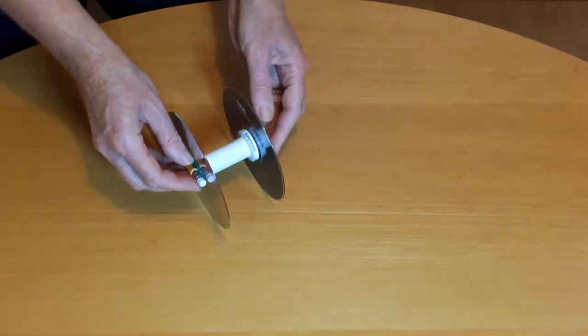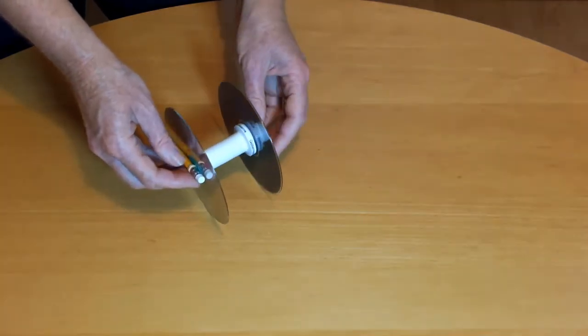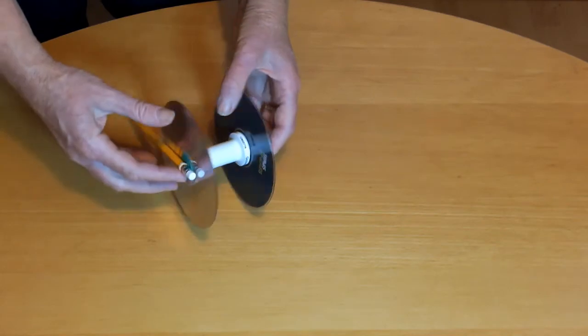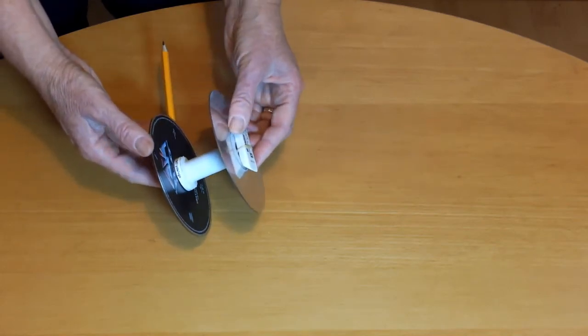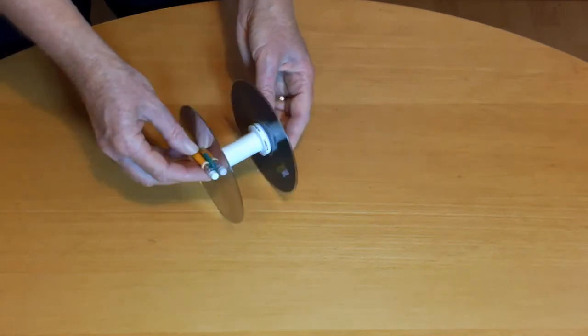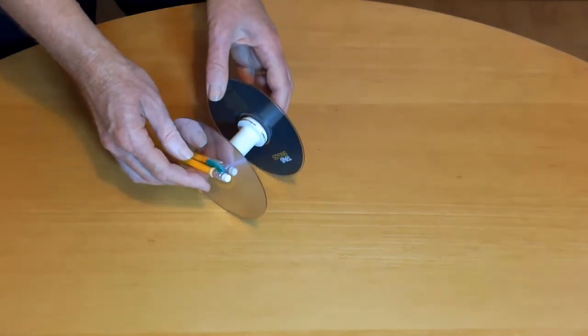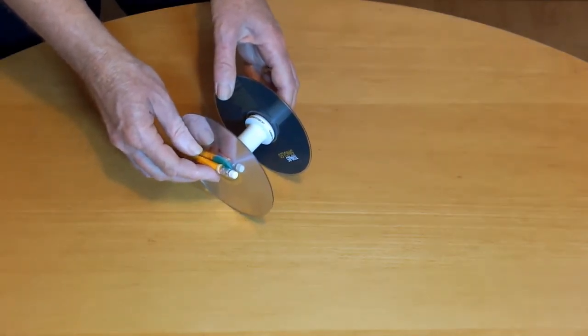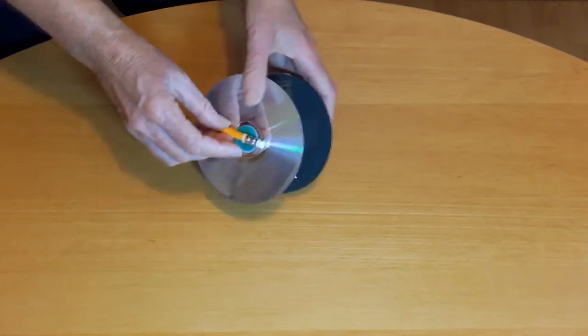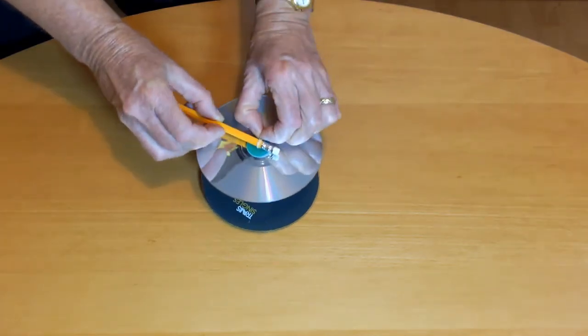If the rubber band is wound much too much, then it can bunch up and rub against the inside of the cotton reel and slow the eraser down or even snap. You can experiment with different lengths and thickness rubber bands to find out which works the best. You can also try having the pencil sticking out more or less.